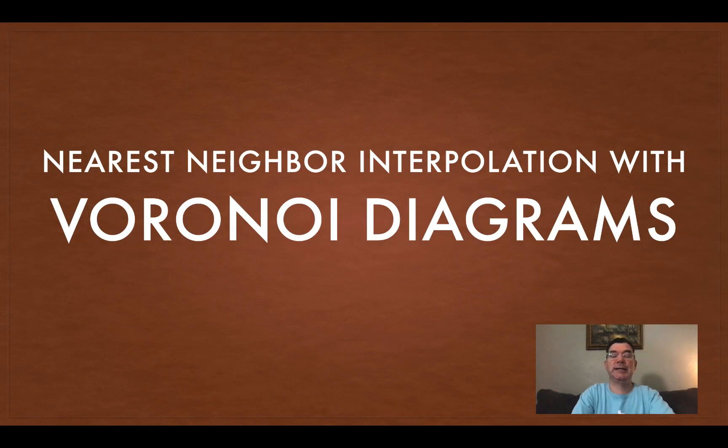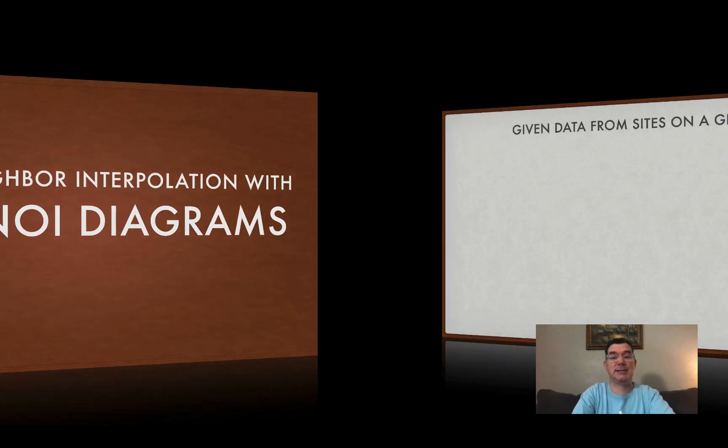Hello again. Today we're going to be continuing our discussion of Voronoi diagrams and we're going to be talking about ways to interpret the diagram once it's been constructed. And one of those ways is called the nearest neighbor interpolation process. So let's get started.